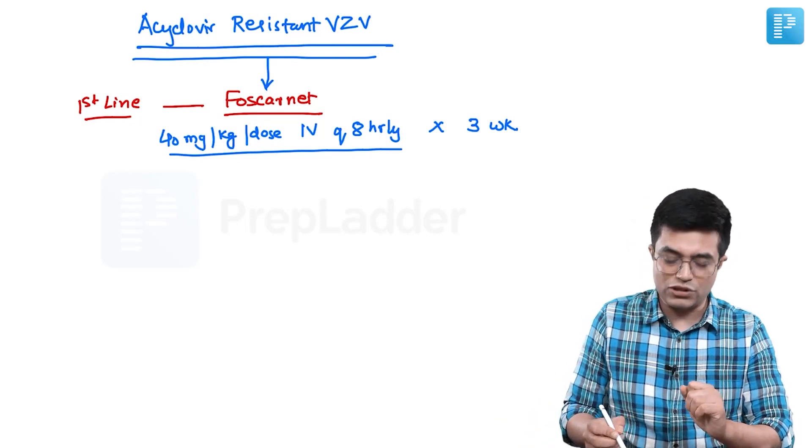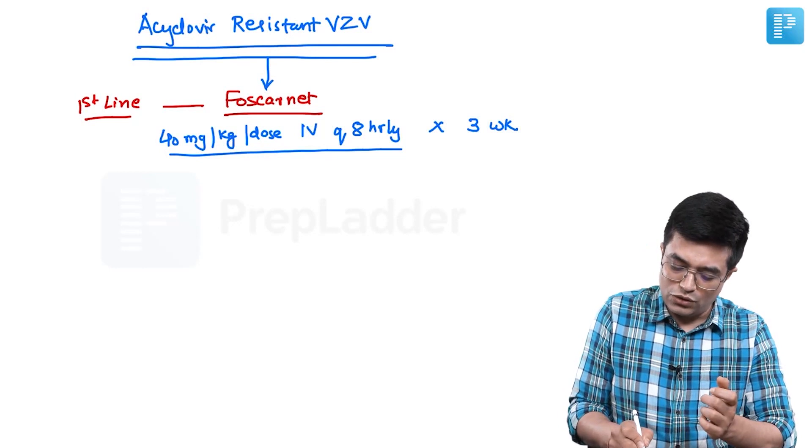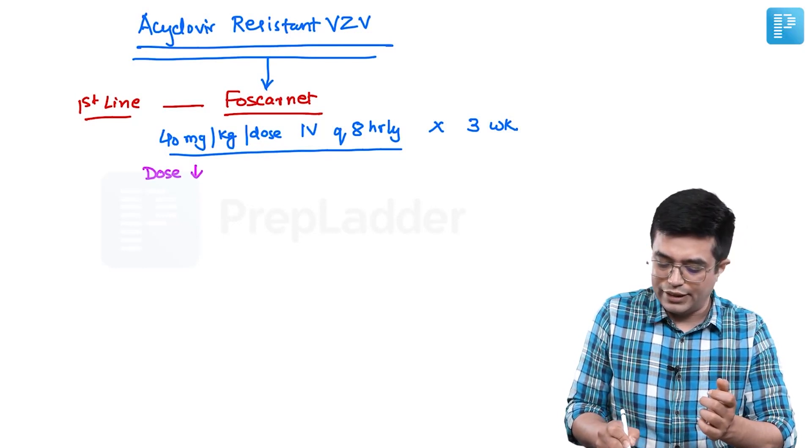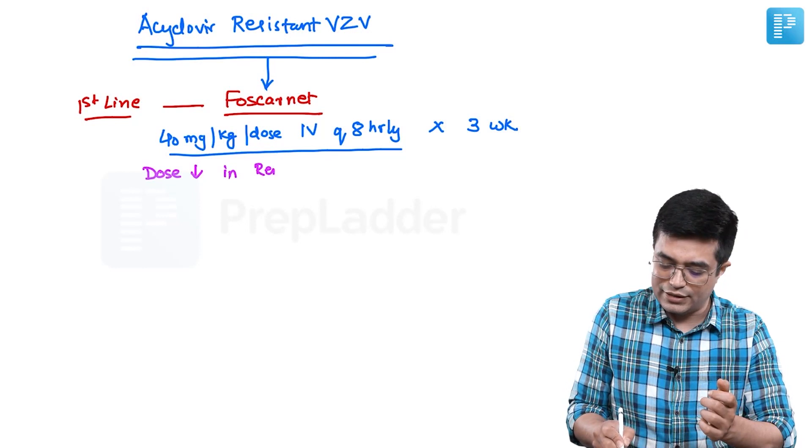Foscarnet, whenever you are giving it, is a very toxic drug. The dose needs to be reduced in patients with renal insufficiency.